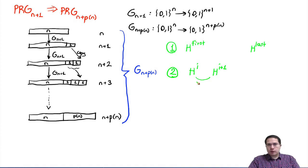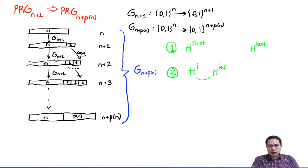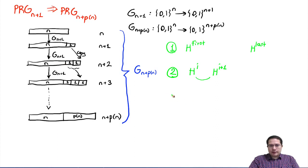One of the main uses of hybrid proofs is when some primitive is repeated multiple times. Here we have G_{n+1} repeated multiple times within G_{n+p(n)}. We will define our hybrids such that the only difference between two neighboring hybrids is something related to G_{n+1} — that's our underlying assumption. So if the adversary can distinguish between one of these neighboring hybrids, we will show we can break G_{n+1}.